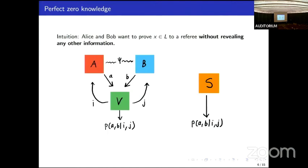Now the second half of the title is perfect zero knowledge. The intuition is that Alice and Bob want to demonstrate that a string X is in a language L without revealing any other information. We can formalize this by noticing that when the verifier interacts with Alice and Bob in an MIP star style scenario, the only thing that the verifier sees is the probability distribution P-A-B-I-J of their answers conditioned on their question pair. If there's a polynomial time Turing machine S called the simulator that can output this correlation exactly, then the verifier doesn't learn anything from interacting with the players other than the fact that they can produce this correlation that the verifier expects to see in an accept instance.